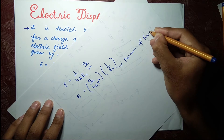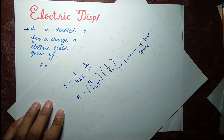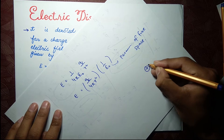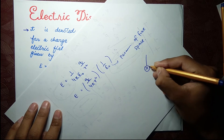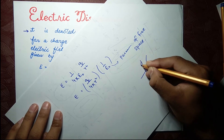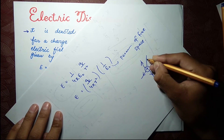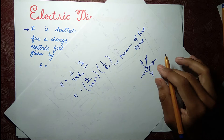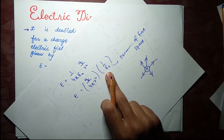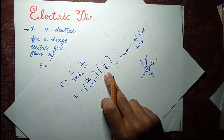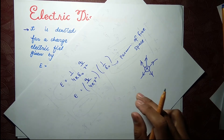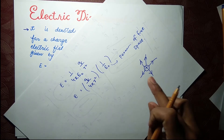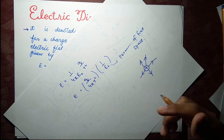Epsilon naught here is the permittivity of free space. This means that when an electric field from a positive charge is generated in free space, it is reduced by the epsilon naught factor. Because epsilon naught is in the denominator, it reduces the whole effect of the electric field by this term.